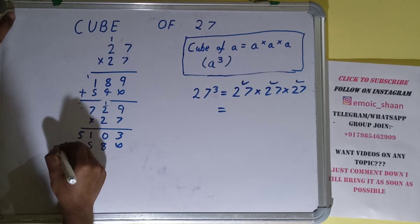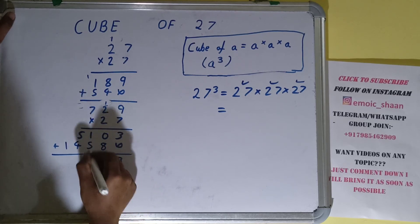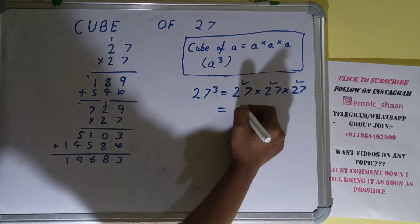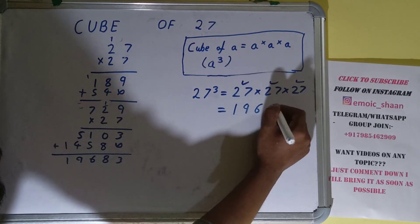Just add them all - 3, 8, 6, 9, 1. So the answer will be 19683.